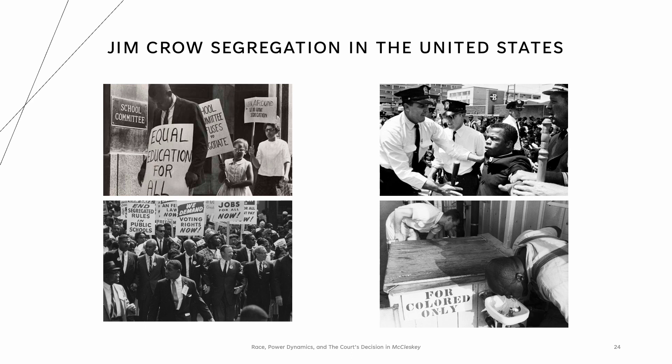Jim Crow's segregation in the United States: Jim Crow refers to segregation laws primarily found in the South that enforced racial segregation from the Reconstruction era in the late 1800s to the Civil Rights era of the 1950s and 60s. One case law example includes Plessy v. Ferguson, which codified at the state level the concept of separate but equal. Not until nearly 60 years later in Brown v. Board of Education was the ruling in Plessy overturned. Subsequent Supreme Court decisions and federal legislation during the Civil Rights era progressively dismantled Jim Crow segregation laws.